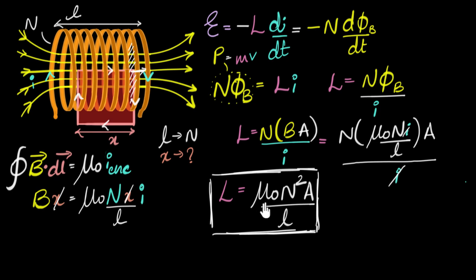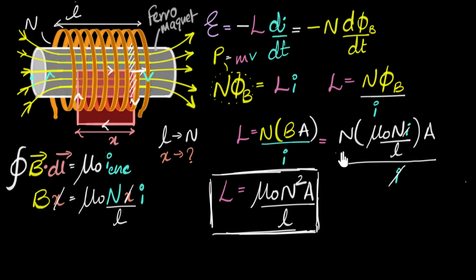But how does it depend upon material? So it doesn't depend upon the material of the wire, but depends upon what it's wrapped around. See, if it's wrapped around air, then you use μ₀, permeability of air or vacuum. But say you wrap it around some kind of a ferromagnet,